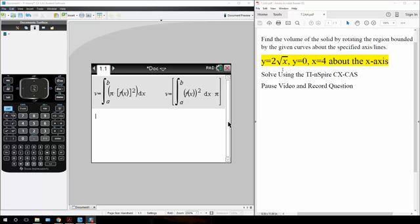So we have y equals 2 square root of x, y equals 0, and x equals 4, and we want to rotate about the x-axis.